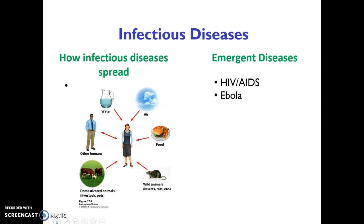Ebola is caused by a virus, and in the last five years or so there have been emerging infections and spreads in Africa. It has actually been around since 1976. The death rate from Ebola is very high, it can spread person to person, and even someone preparing a deceased person's body for a funeral can become infected.